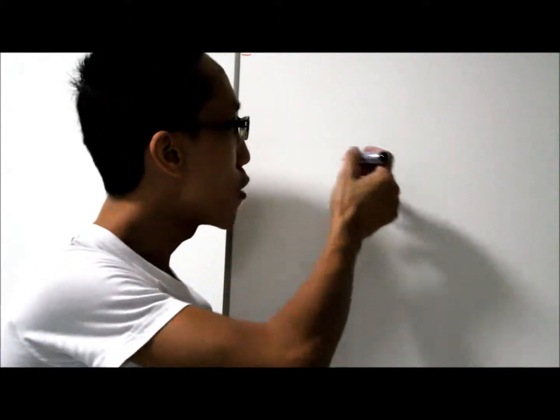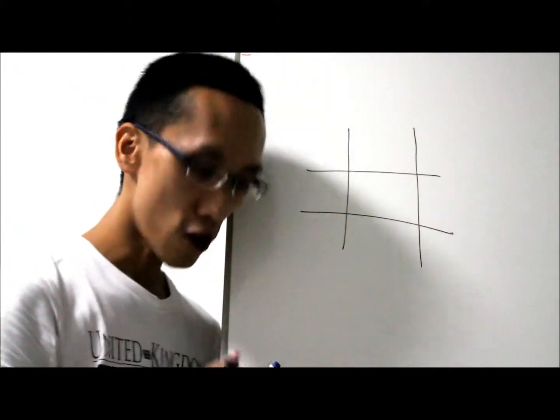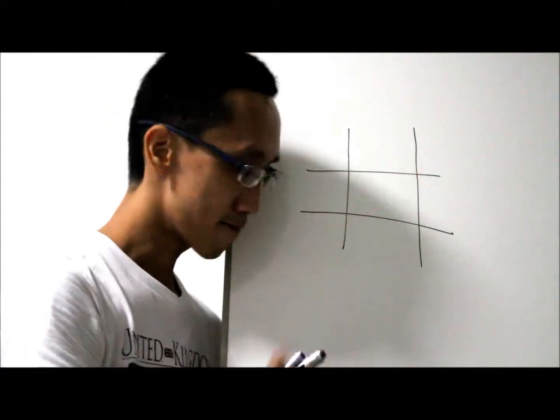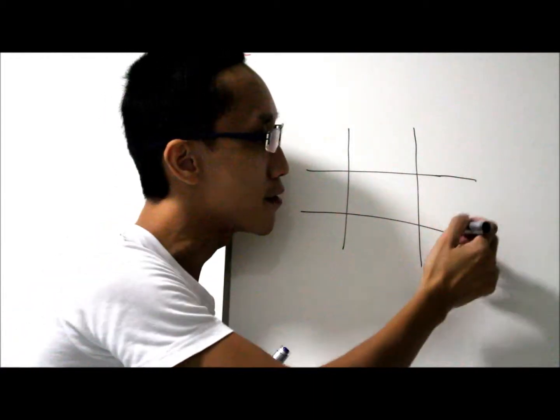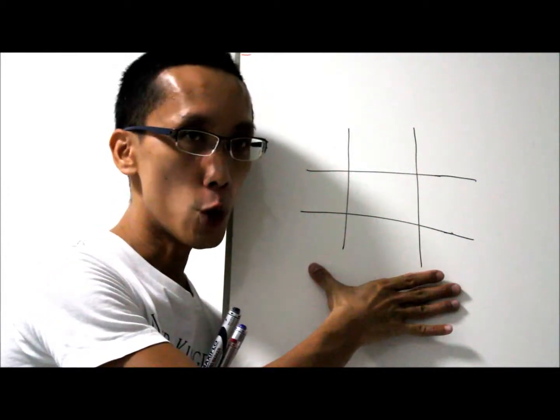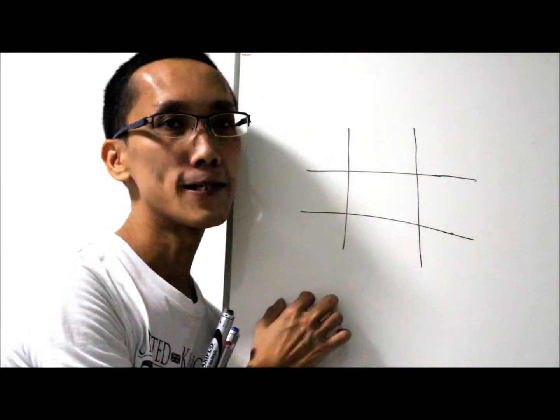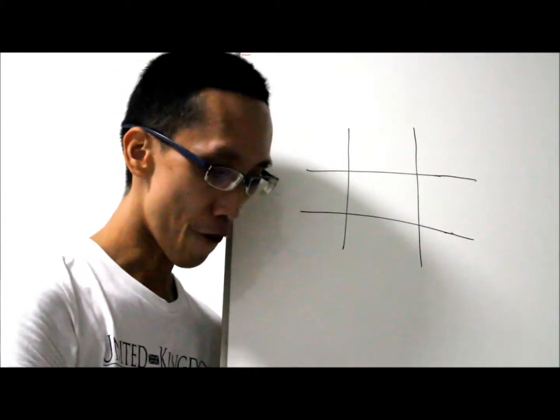So now I will share with you the interesting way to learn the 3 times table. Definitely everybody knows this game called tic-tac-toe and of course we are not going to use the cross and the zero. We are making use of the tic-tac-toe to learn the 3 times table. Interesting? Let's move on.